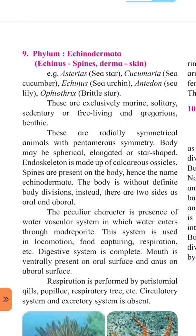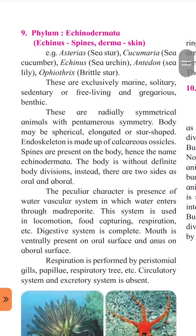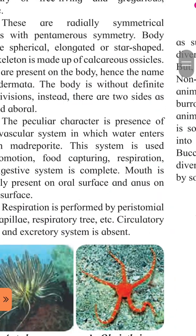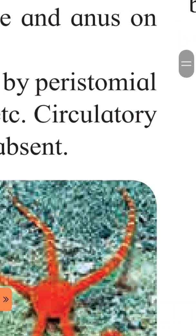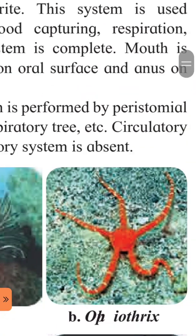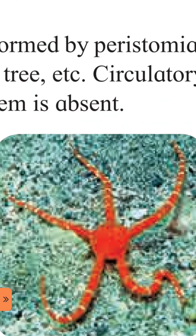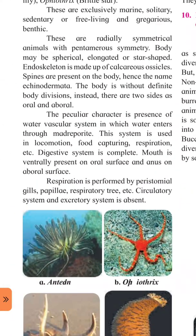Other characters of phylum Echinodermata: the body is without definite body division. Instead, there are two sides — oral and aboral. Inke body ko do sides se divide karte hain: ek frontal side aur ek pichle wali side. Pentamerous symmetry bhi dikhta hai yahan. Do sides hain — saamne wala oral surface, aur peechhe wala aboral surface.